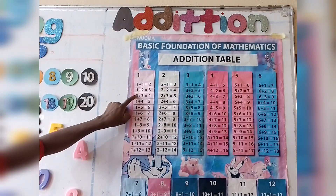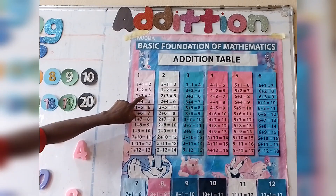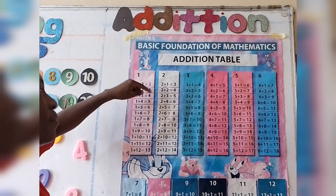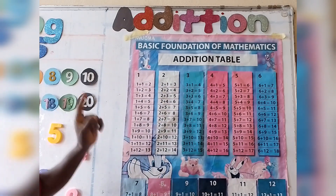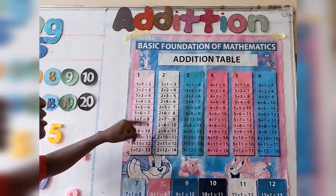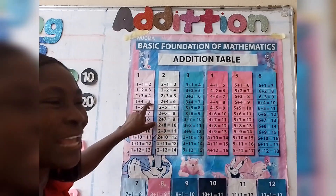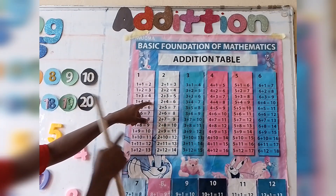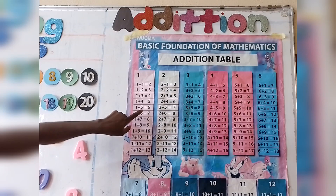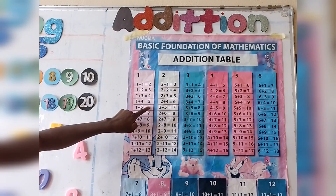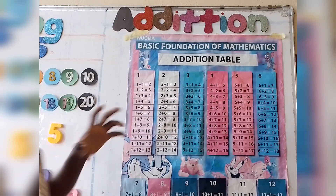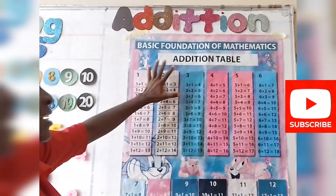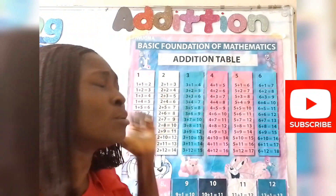When you add one plus three, what you have is four. The number that follows number three on the number line is number four. When you add one plus four, what you get is five. The number that follows number four is number five. When you add one plus five, what you have is six. This helps our mental math. When you use the addition table, it helps our mental math.